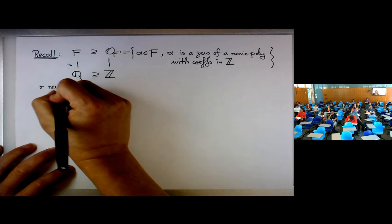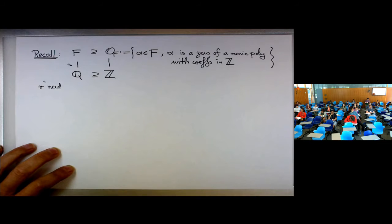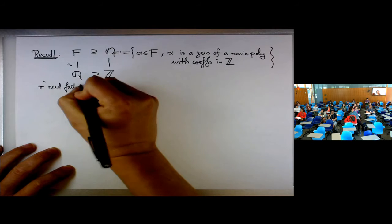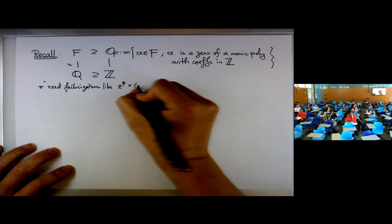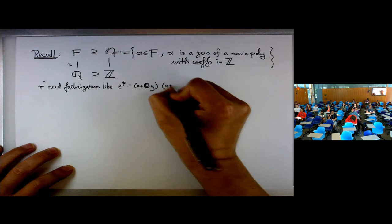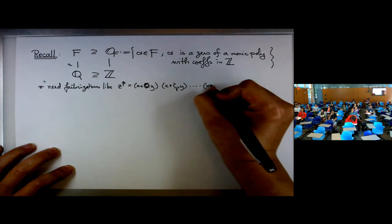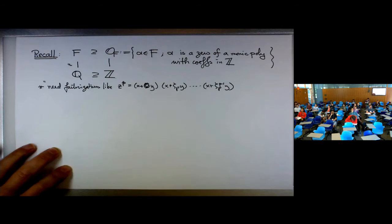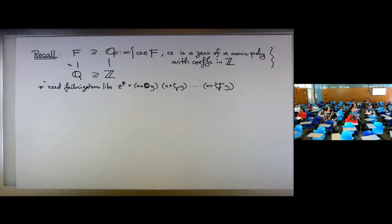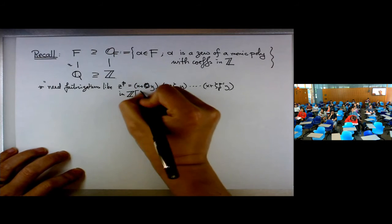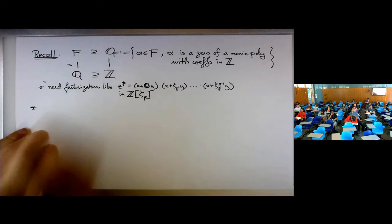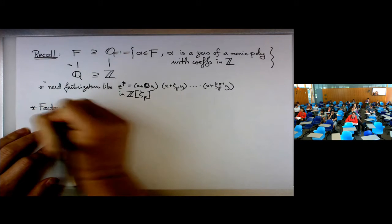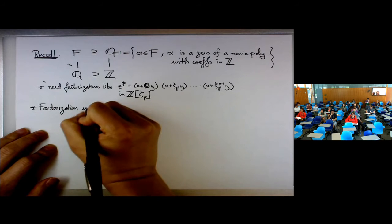Let's recall why we want to study number theory — we need this kind of machinery. By the example of Fermat's Last Theorem, we need some sort of factorizations. The first step to approach Fermat's Last Theorem was to factor things in a ring of integers like Z adjoin zeta_p, for p an odd prime. That brings us to today's topic: understanding the factorization in the ring of integers O_F.